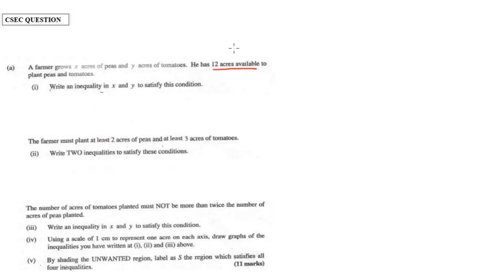It says that a farmer grows x acres of peas and y acres of tomatoes. He has 12 acres available to plant peas and tomatoes — write an inequality in x and y to satisfy this condition. He has 12 acres available, so he couldn't plant more than that. Whatever he's planting would have to be less than or equal to 12. He has x acres of peas and y acres of tomatoes, so in all that would be x plus y, and all of that has to be less than or equal to 12.